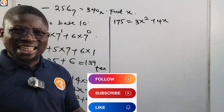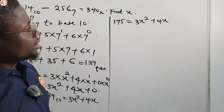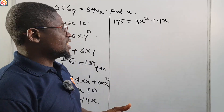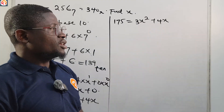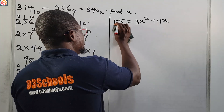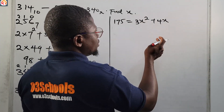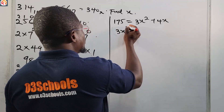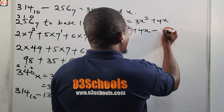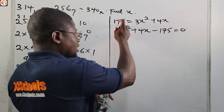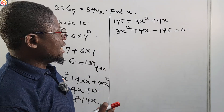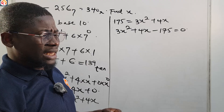Please give this video a like and share it. Now, what do you do next? We rearrange. As you can see, this is already a quadratic equation because the highest power of the unknown x is 2. Let's rearrange it into standard quadratic form: bring 175 to the right hand side — since 175 is positive here, crossing to the other side it becomes minus 175 — giving us: 3x squared plus 4x minus 175 equals 0.